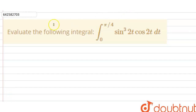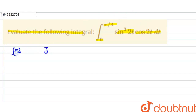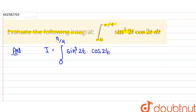Hello everyone. In this question we have to evaluate the following integral. The integral is given as the limit 0 to π/4 of sin³(2t) · cos(2t) dt.